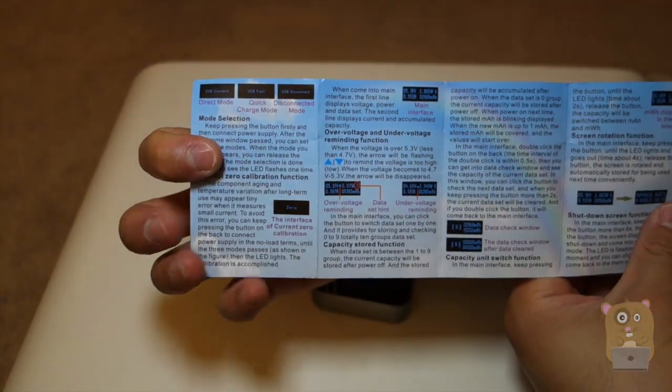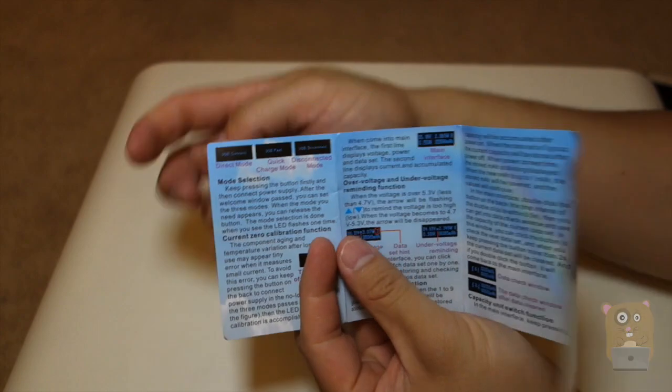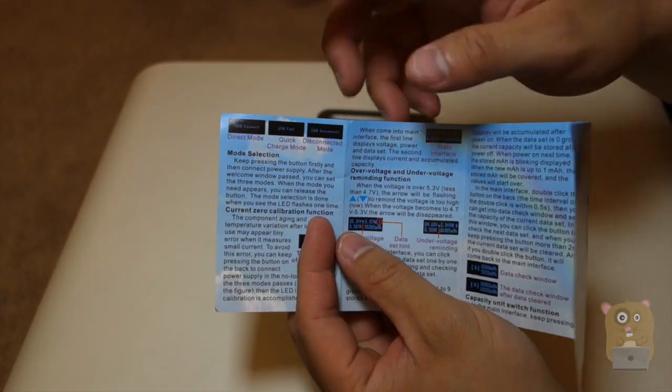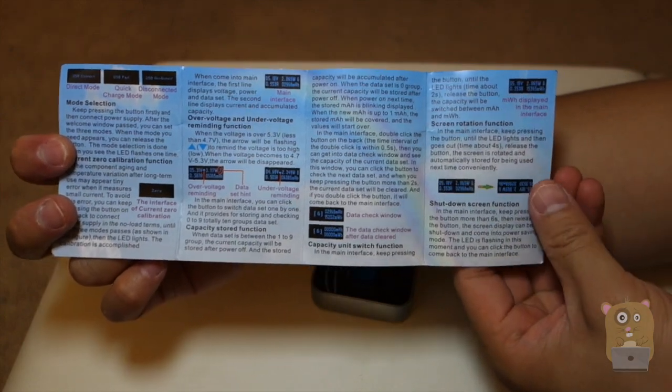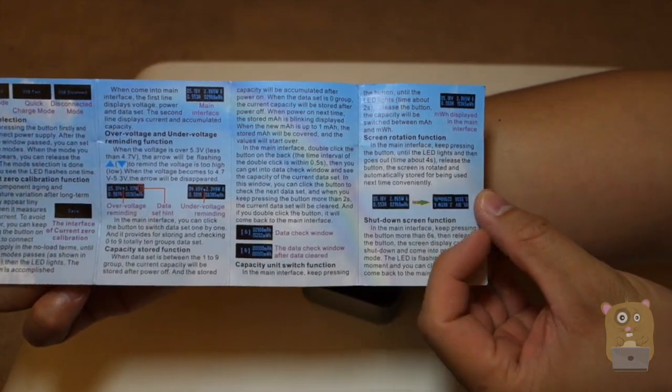That's on the back. There's a couple of mode selections: you can just have a bigger direct connection, quick charge, and disconnect mode. Here are some of the other sections on the manual.